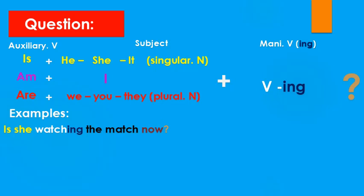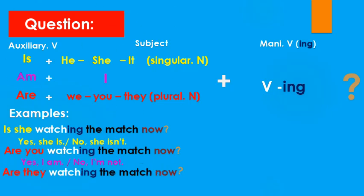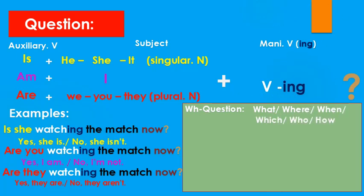The answer is yes or no: 'Yes, she is' or 'No, she isn't.' Another one: 'Are you watching the match now?' The answer is 'Yes, I am' or 'No, I'm not.' Another one: 'Are they watching the match now?' The answer is 'Yes, they are' or 'No, they aren't.'